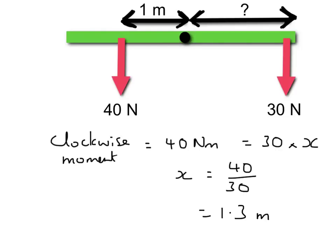If you get more complicated problems with another force and another distance, what you do is work out the moment for each force separately and then add those two together to get the total anticlockwise moment. Likewise, if there's more than one force on the other side, you work out the moments individually and add them up to find the total moment in either the clockwise or anticlockwise direction.